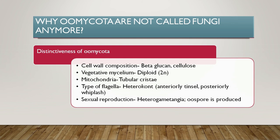Regarding flagella, Oomycota pathogens have heterokont flagella — two flagella: one is the tinsel type, located anteriorly, and the other is the whiplash type, located posteriorly. This is a distinct characteristic of Oomycota. Regarding sexual reproduction, Oomycota produce heterogametangia — morphologically distinct male and female gametangia — and the spore produced after sexual reproduction is called an oospore, found only in Oomycota.